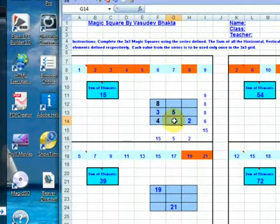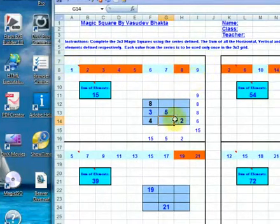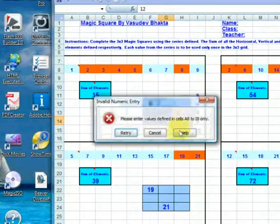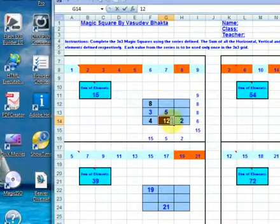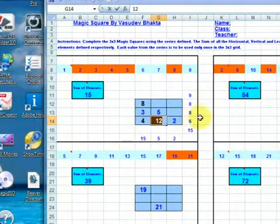We have a total of 15 vertically down. What you'll also notice is if you use any numbers outside of this range 1 to 9, say number 12, it will instantly come up with an invalid numeric entry dialog which suggests that you've put a wrong value in. Please enter values defined in cells A8 to I8 only. So let's click retry and enter values from one of these numbers that are left.